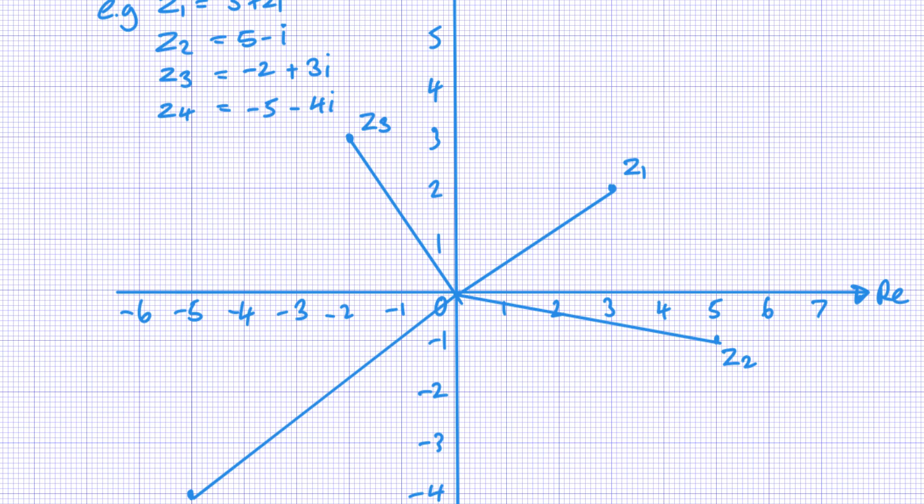And there you have the four complex numbers plotted with their vectors. So again like I said, the vectors become quite important when we start looking at the angles. So this is the modulus argument which we're looking at next, but otherwise this is generally pretty straightforward.